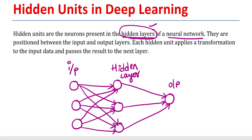There are three layers: the first one is called the input layer, the second one is called the hidden layer, and the third one is called the output layer. In this diagram, the first layer is the input layer, followed by hidden layers, and then the output layer. I have three inputs, three hidden layer neurons, and one output.